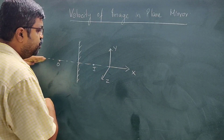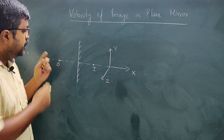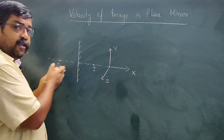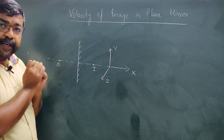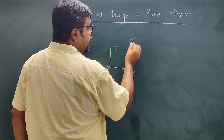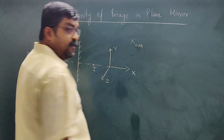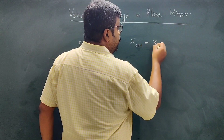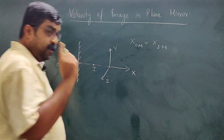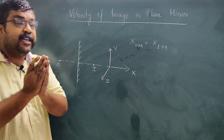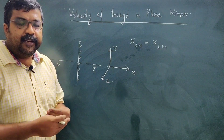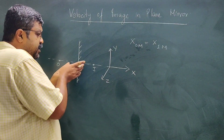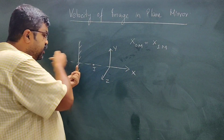The position of object and image is along the x-axis. We know that for a plane mirror, the distance of the object from the mirror equals the distance of the image from the mirror. So the position of the object with respect to the mirror equals the position of the image with respect to the mirror. But if we use sign convention, if I measure distance in the positive direction, then distance measured in the opposite direction would be negative.